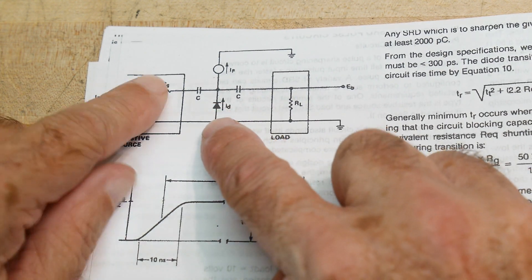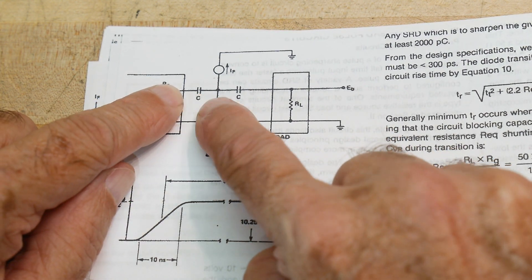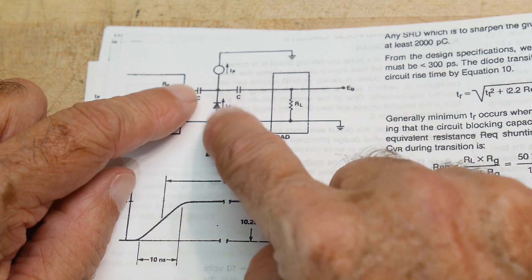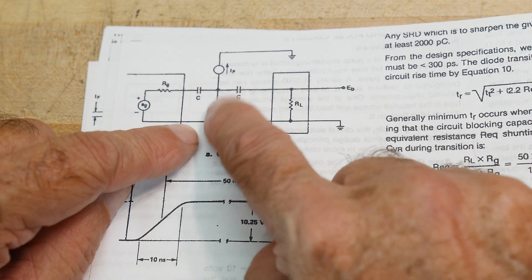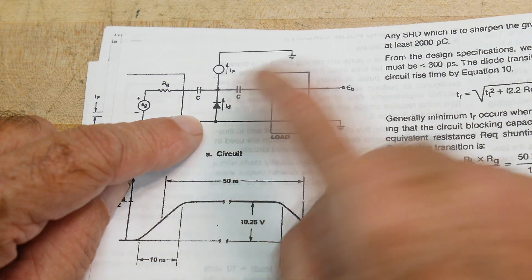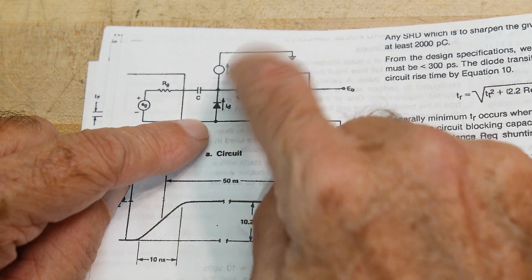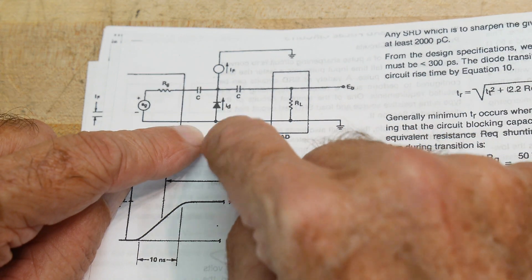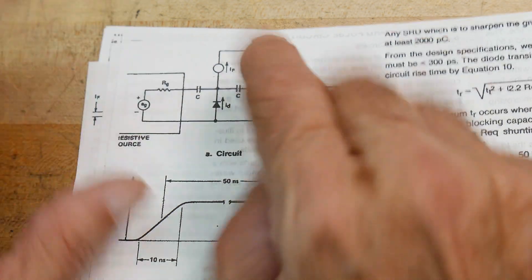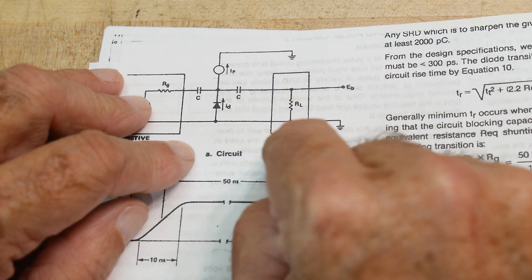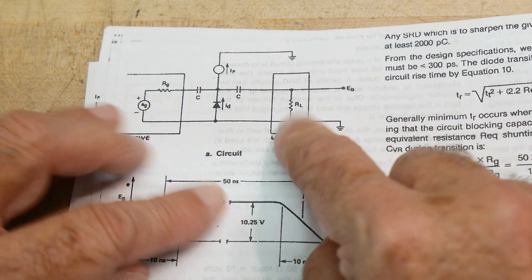So there's a function generator that comes in, it's capacitively coupled in, and it goes into the diode, and the diode is in sort of upside down. And then you apply some current, and you bias this diode on a little bit, so it's kind of ready to go. And then when it fires, it capacitively couples out into 50 ohms, and there you go.